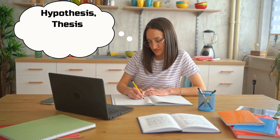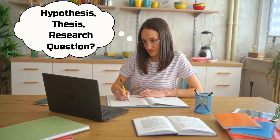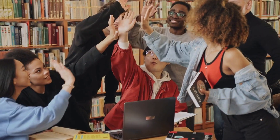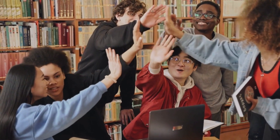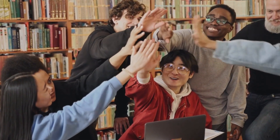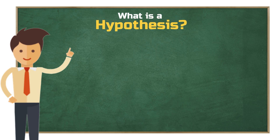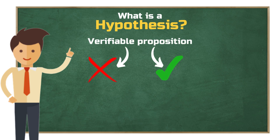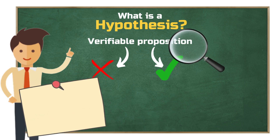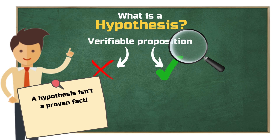When you're working on a research project, terms like hypothesis, thesis, and research question can easily get mixed up. But each of these has a distinct role, and knowing their differences is crucial for your project success. So let's first clarify the basics by answering the question: what exactly is a hypothesis? A hypothesis, from the Greek word meaning assumption, is a proposition that can either be supported or refuted through scientific investigation. It's important to note that it doesn't represent a proven fact. Rather, it's a statement that's likely to be correct — your best assumption based on the available information gathered from scientific literature.